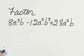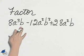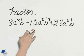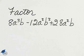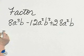Let's factor the trinomial 8a cubed b minus 12a squared b squared plus 28a squared b. The common factor comes out.